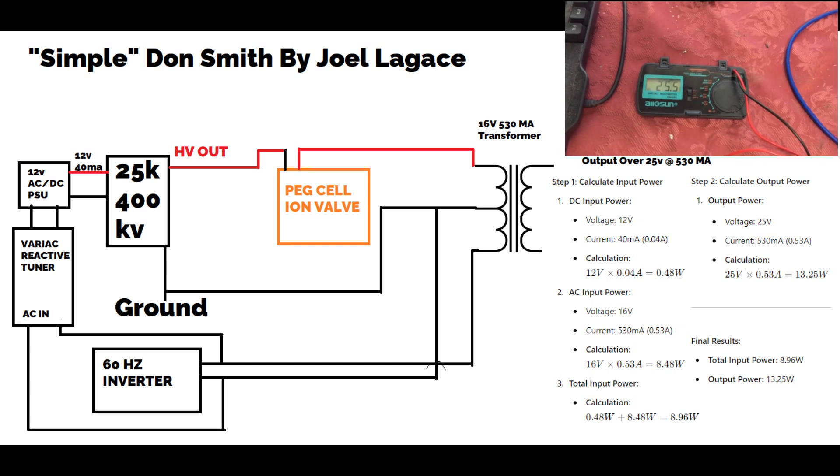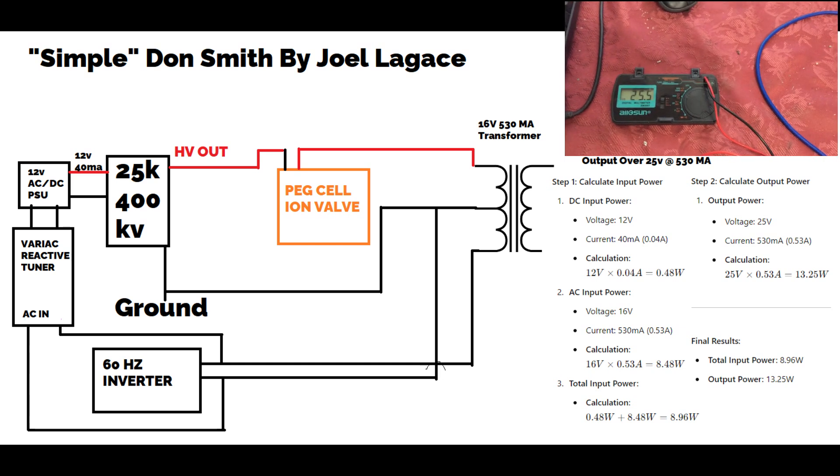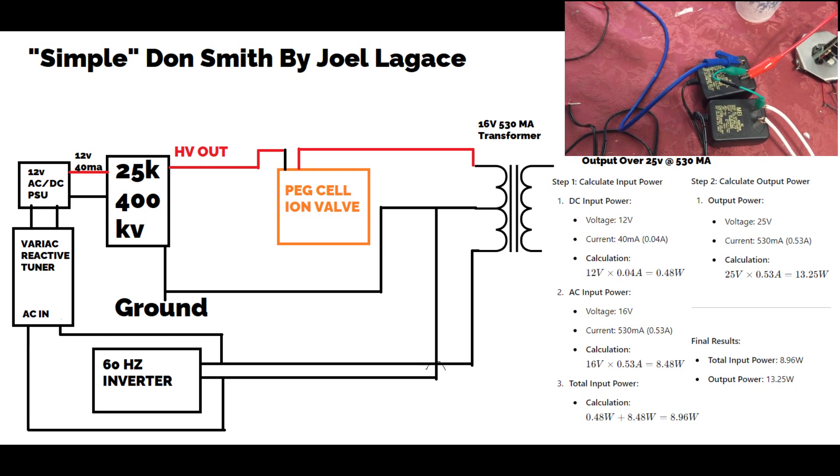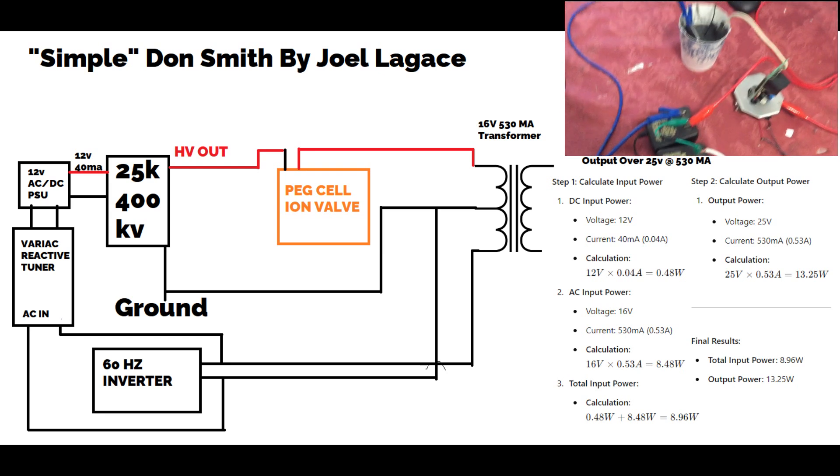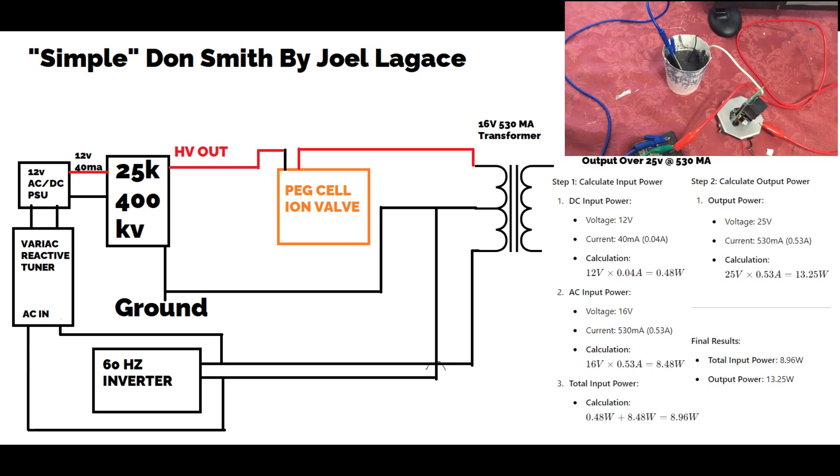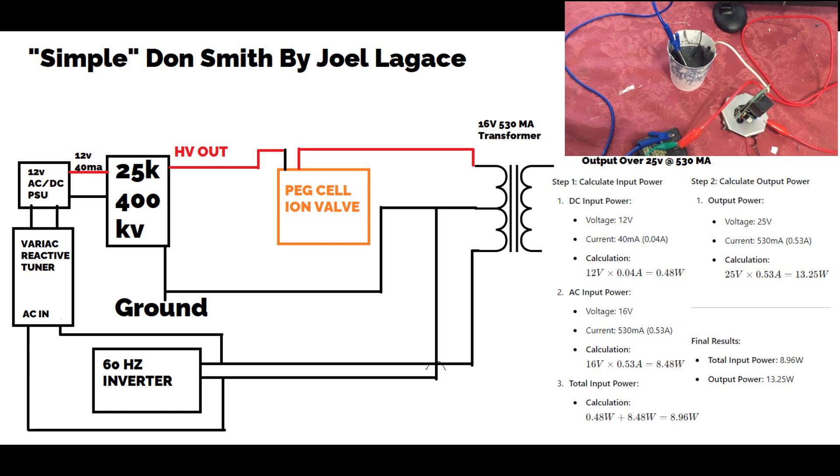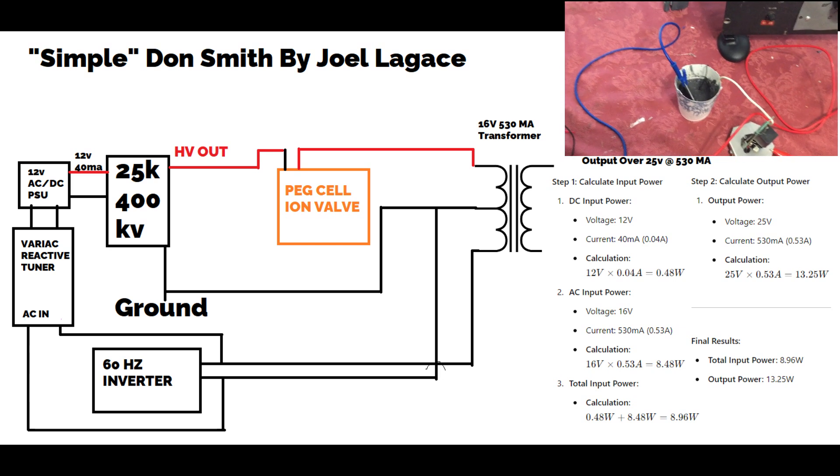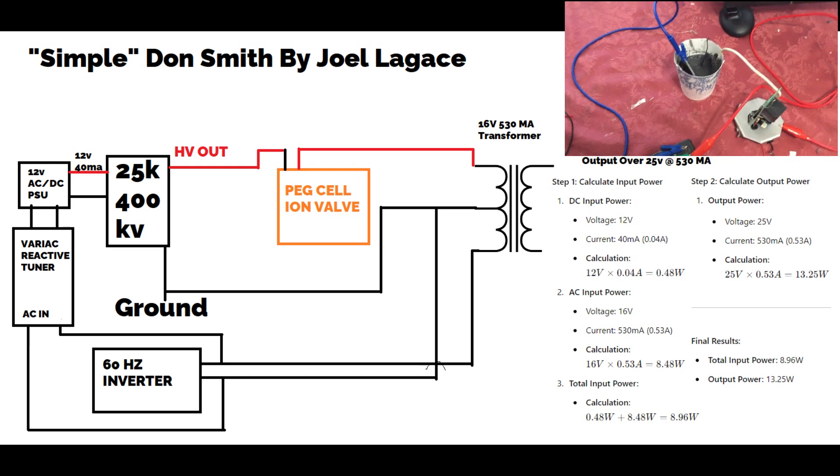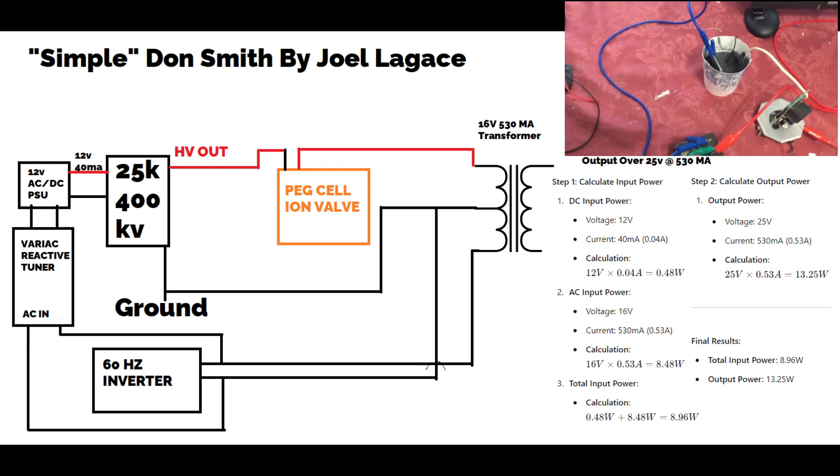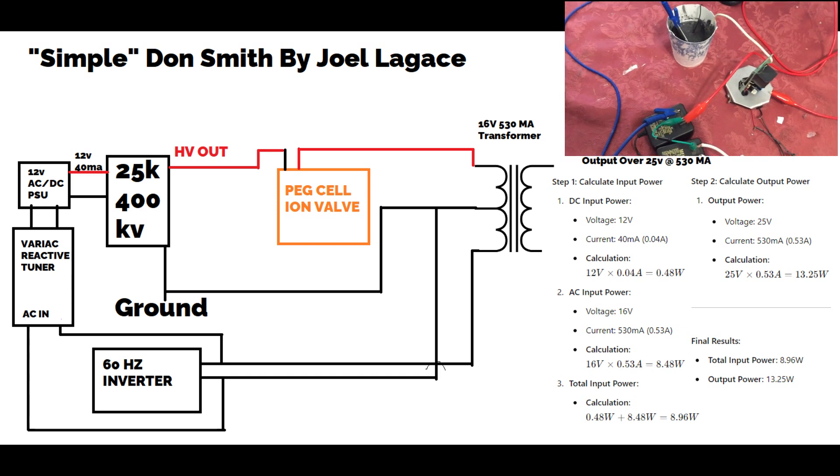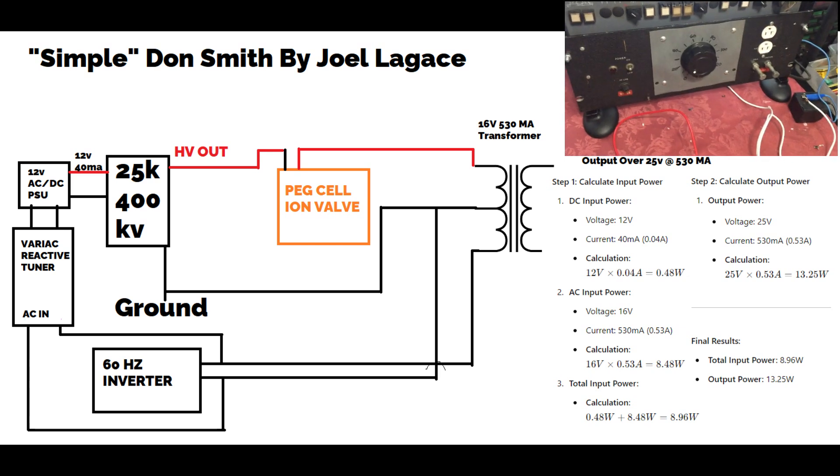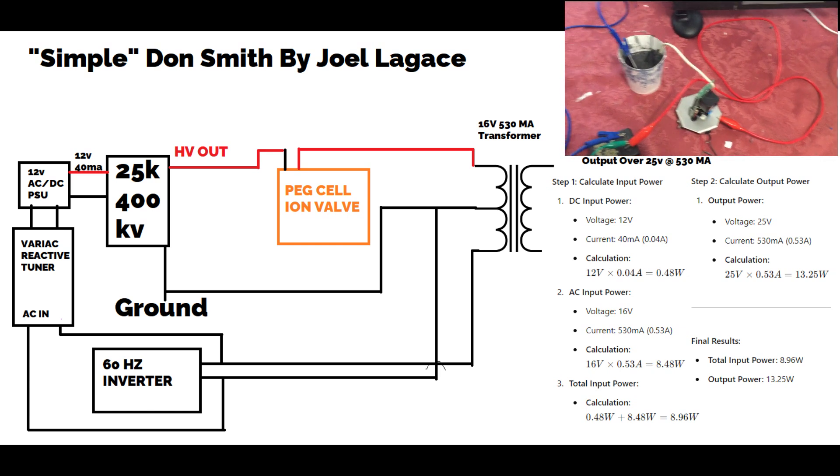But again in the typical Don Smith setup he uses a different method with Tesla coils and things like that to bring up his very very high voltage and he introduces a little bit more current but with that said he gets a lot higher output. But with that more complex setup he needs additional filtering stages and things like that and makes and that might be what overwhelms most people to steer away from experimenting with the Don Smith concept.